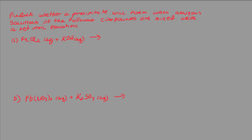Let's replace the iron with the potassium, so we'll end up with potassium chloride — make sure you write the formula correctly. Then we replace the potassium in potassium hydroxide with the iron(II), giving us iron(II) hydroxide. We also need to balance this equation: there are two chlorines on one side, so we put a 2 in front of potassium chloride, and a 2 in front of the hydroxide. Now we have a balanced equation.